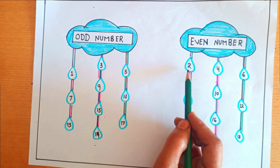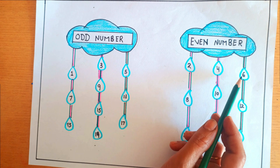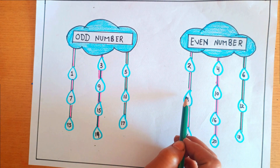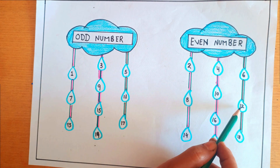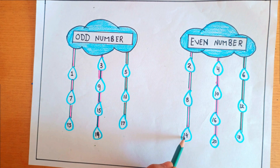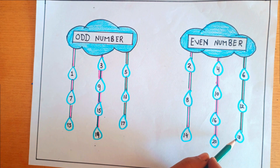For example, 2, 4, 6, 8, 10, 12, 14, 16, 18, and 20.